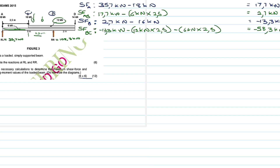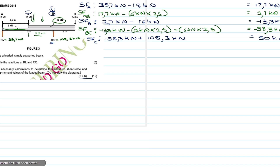At point C there is an upward reaction, so we add it to the previous result. We take −58.3 kN and add the reaction at C of 108.3 kN. So: −58.3 plus 108.3 = 50 kN. The shear force at C is 50 kN.